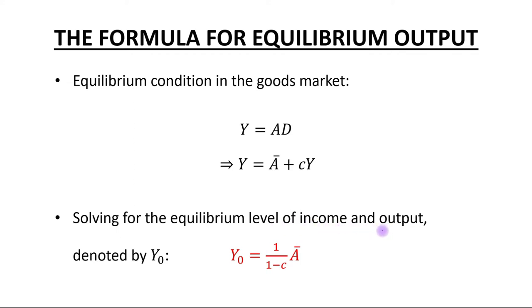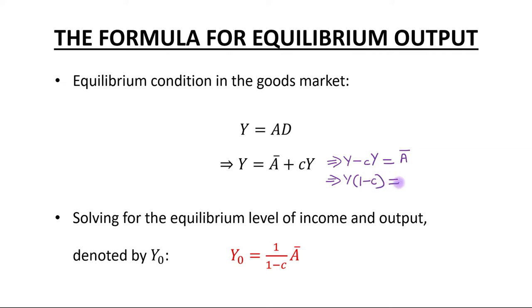Solving for the equilibrium level of income and output, denoted by Y0: Y minus MPC times Y equals a_bar. Taking Y as common, and the final step gives us the equilibrium level of output as 1 upon (1 minus MPC) times autonomous spending.